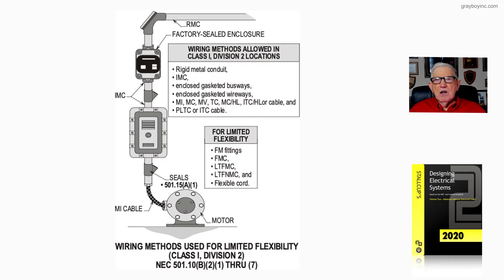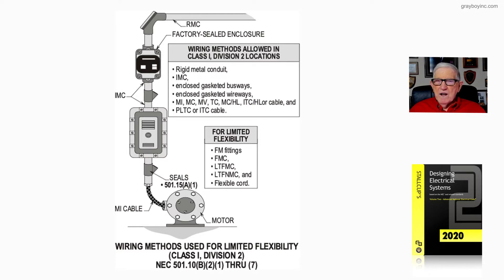At the very top of the illustration, we have rigid metal conduit, a 90-degree type L, coming into a factory sealed enclosure — so no seal is required there.